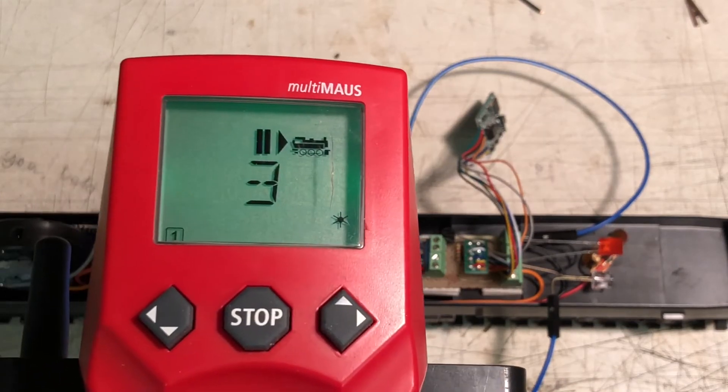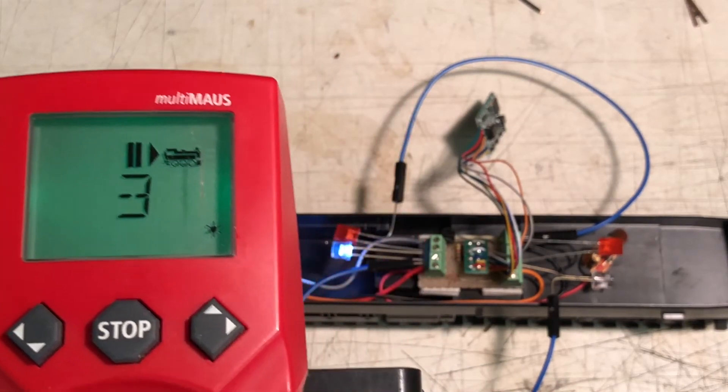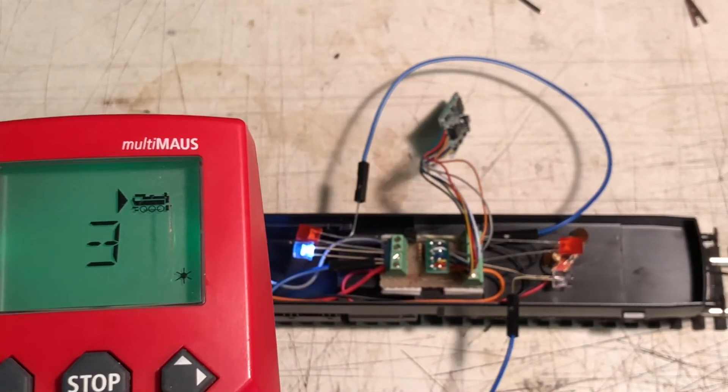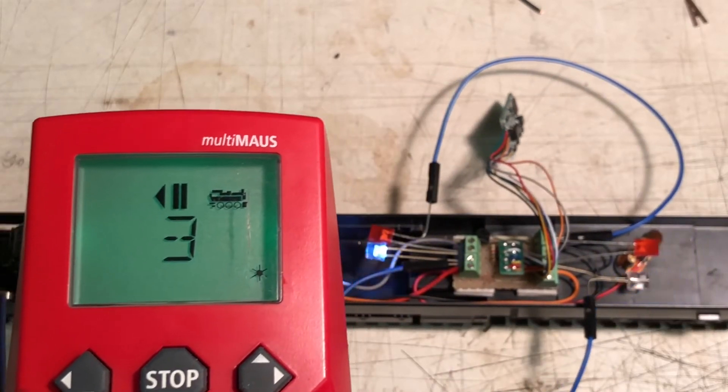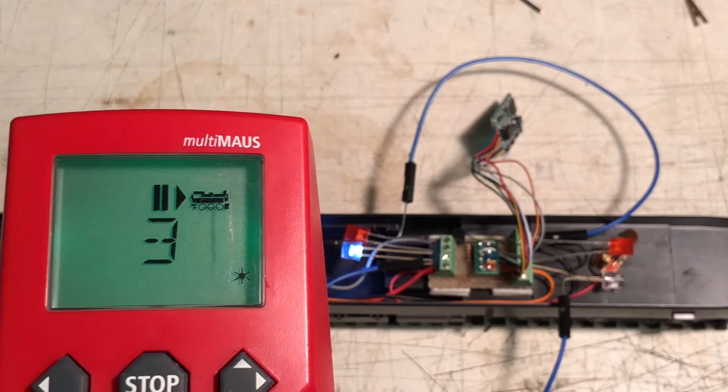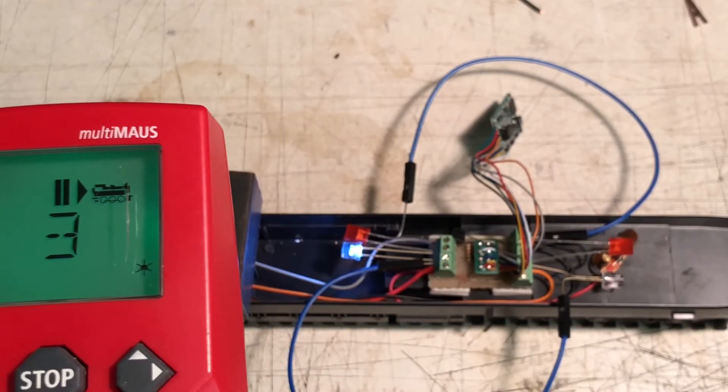And then just function 1 again, tail lights go off, but headlights carry on working as normal. And that's all part of the circuit board.